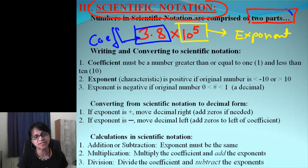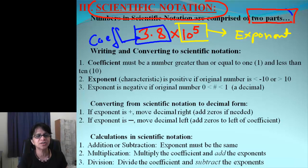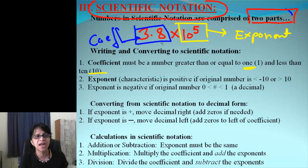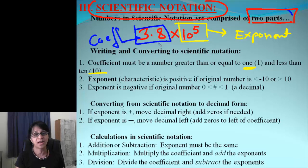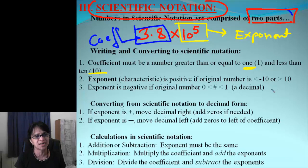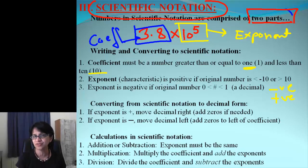There are some rules and restrictions about both Coefficient and Exponent. One important thing is a Coefficient must be a number between 1 and 10. So I cannot have this written as 0.38 times some number, or as 38.0. I have to have the Coefficient between 1 and 10. About the Exponent, it can be either negative or positive — both are valid.